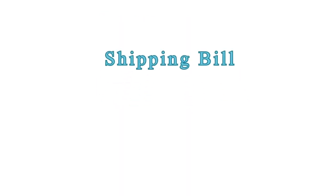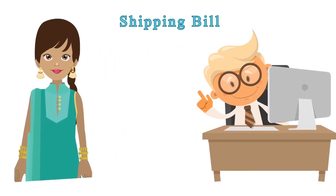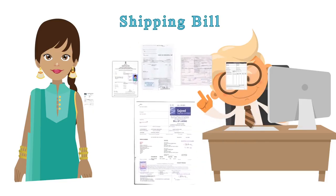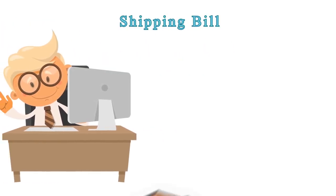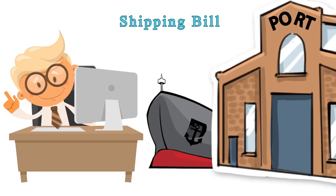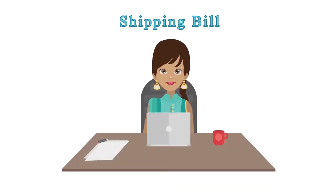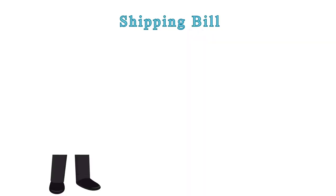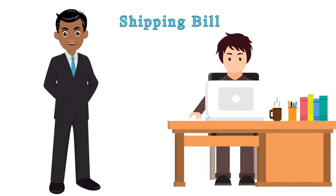Shipping Bill. The Custom House Agent (CHA) will issue a sample shipping bill after receiving the Commercial Invoice (CI), the Packing List (PL), and other documents. After approval, the CHA will file the shipping bill with the Customs Department of the port concerned. While Nikku can file the shipping bill herself using the ICEGATE Portal of Customs, she may use the services of a CHA, the Authorized Custom House Agents, while starting out the business.